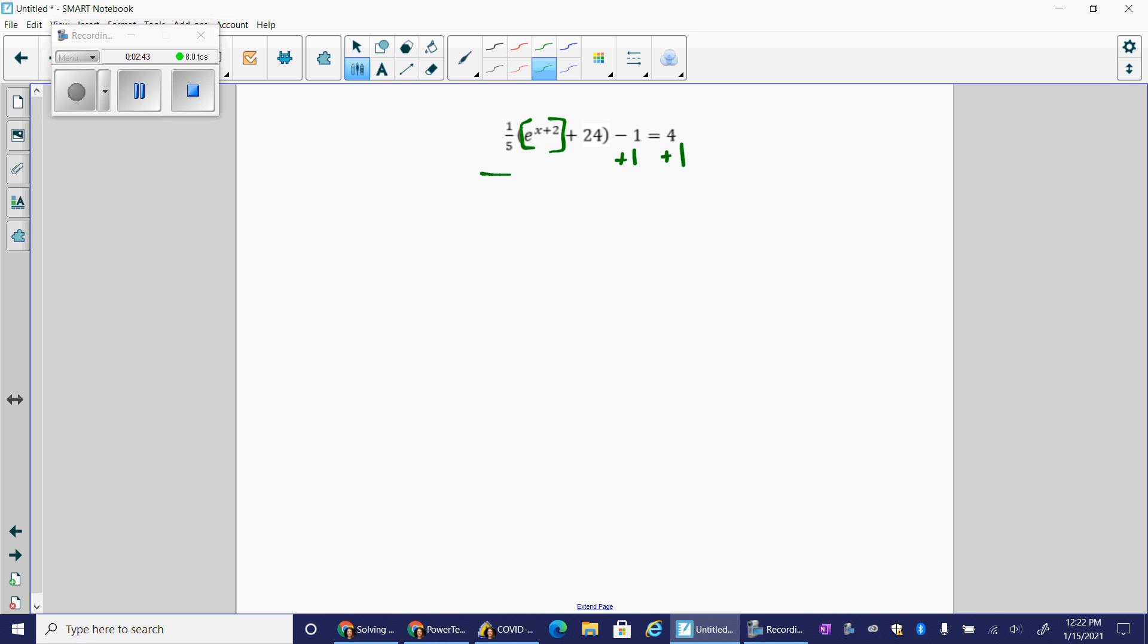We've got to undo the order of operations and I get one fifth e to the x plus two plus 24. Oops, I wrote a half. I said five, but I wrote a two. So one fifth e to the x plus two plus 24 equals 5.